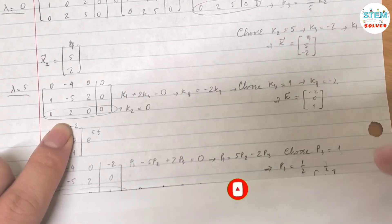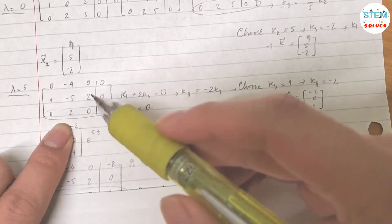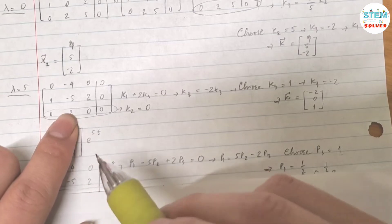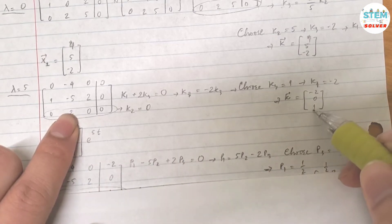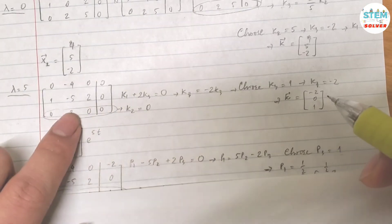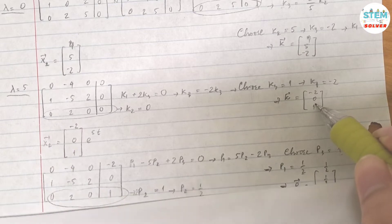So since you have repeated eigenvalues, you are going to use this same matrix but you are going to augment it with the vector K you just found. In this case, vector K which is negative 2, 0, 1. So take this matrix, augment it with this one.